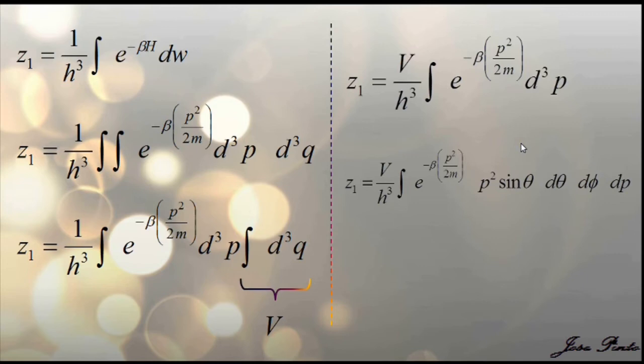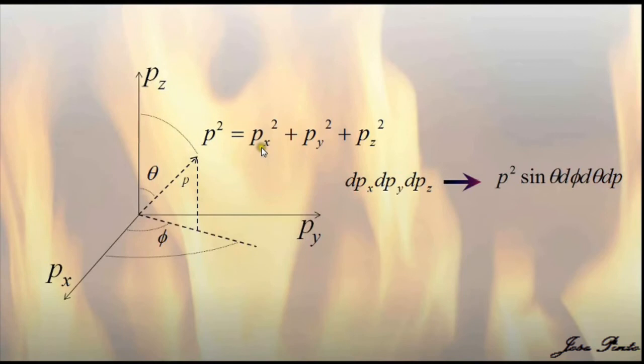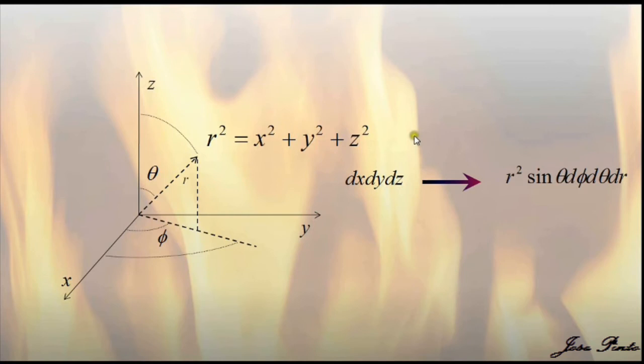And of course, some people might wonder where this comes from. Well, this p square is really px square plus py square plus pz square. But this is just a change of variables.